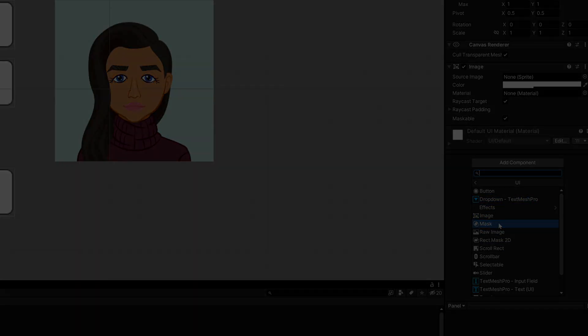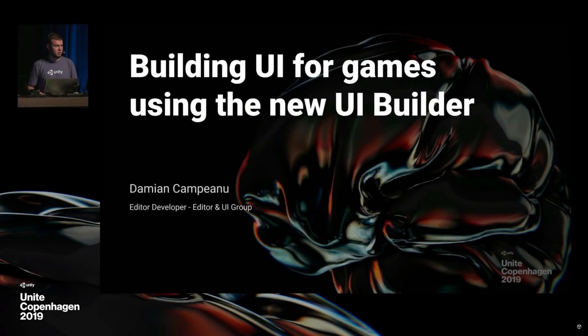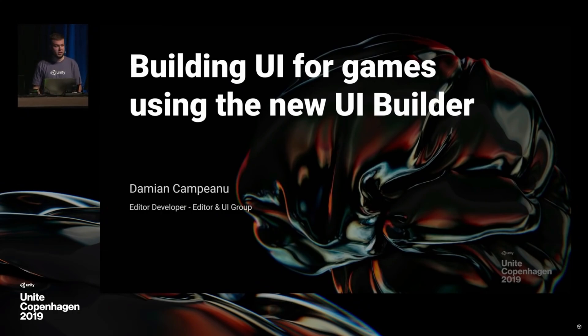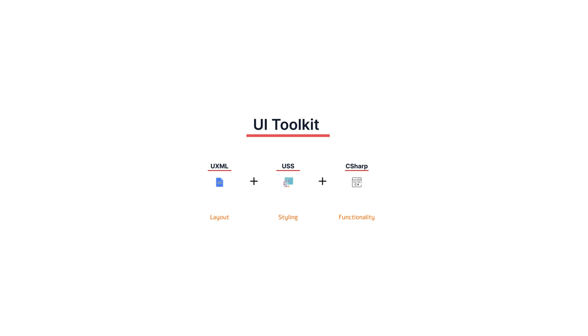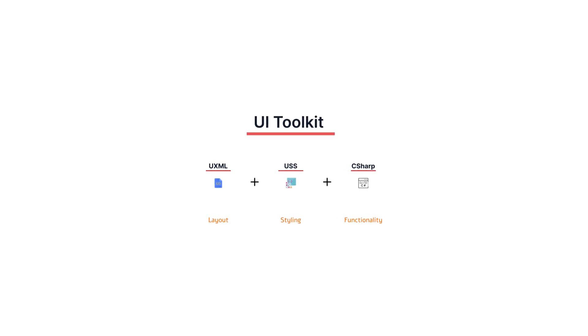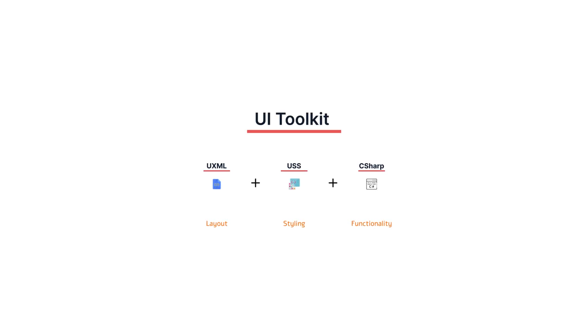Fortunately, those days are gone. In the last years, Unity worked on a new UI system called UI Toolkit, which is now part of the 2022 version of the editor. UI Toolkit is an entirely different way to approach UI work with a nice separation of its layout structure, its styling and its functionality, which is inspired by web technologies.